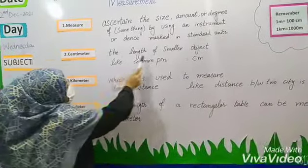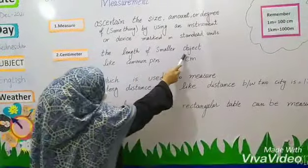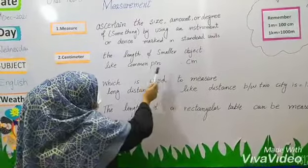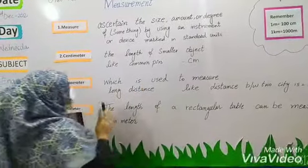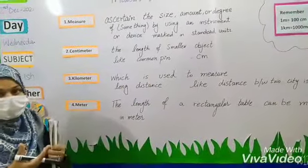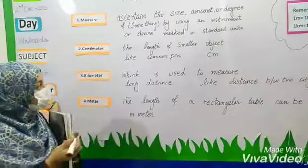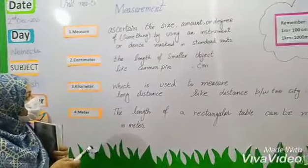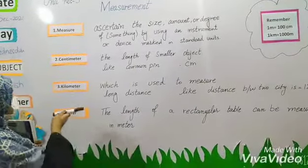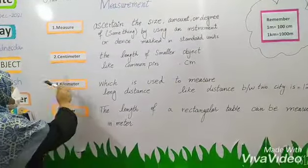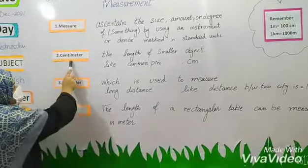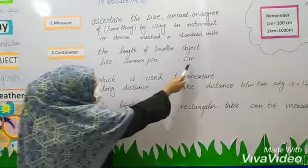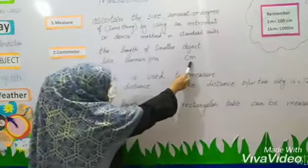The length of smaller objects, like a pencil or a pen, can be measured. For very small pieces, we use centimeter, and the short form is cm.